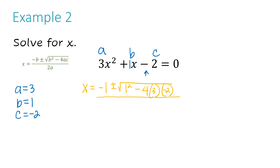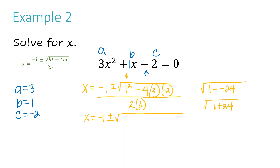Now I draw a line and write everything that goes in my denominator — 2 times 3. So I have x equals negative 1 plus or minus the square root of everything under the radical. Let me simplify: 4 times 3 is 12, times negative 2 is negative 24. Then 1 times 1 for the b squared part is just 1. So I'm left with the square root of 1 minus negative 24, which is the same as 1 plus 24 — remember, two negatives together make a positive. That ends up being the square root of 25, which is a perfect square. So the denominator is 2 times 3, which is 6.